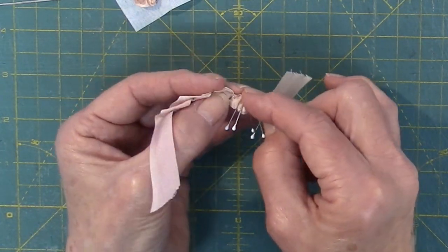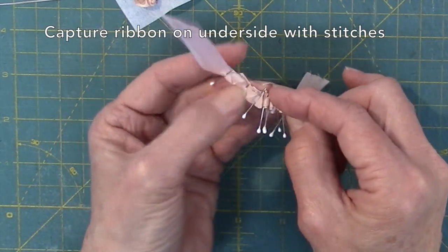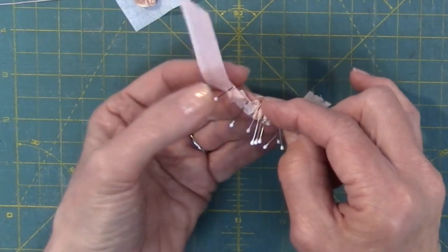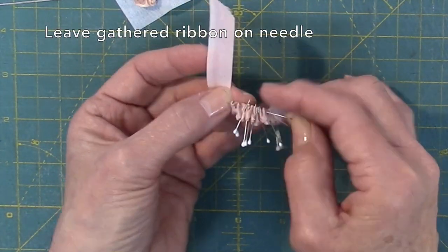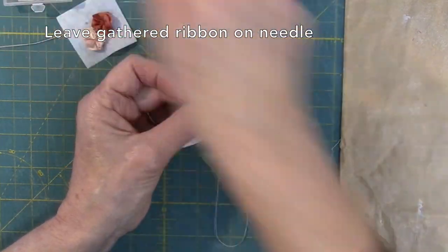Gather stitch along the folded edge where the pins are pointing toward and capture all the ribbon layers on the underside. Leave all the gathers on the needle and remove most of the pins.